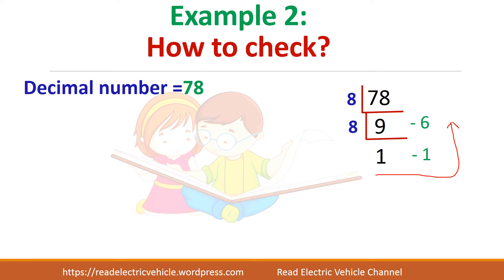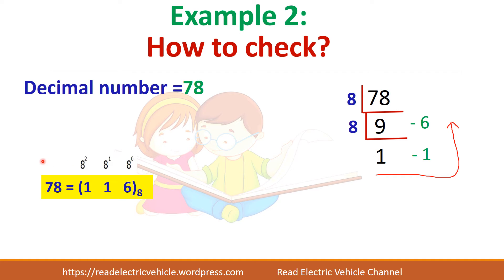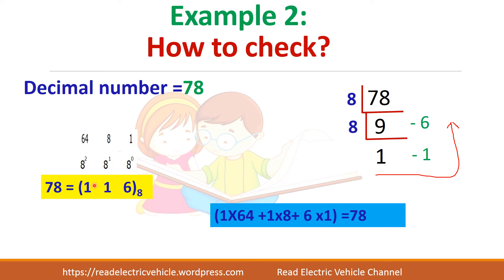Let us check whether our answer is correct. Take the octal number 116. For each digit position there is a weightage: the least significant position is 8 power 0, the next is 8 power 1, and the next is 8 power 2. Calculate: 8 squared is 64, 8 power 1 is 8, 8 power 0 is 1. So 1×64 + 1×8 + 6×1 = 78. This confirms the answer is correct. If you make a mistake, the summation will differ.